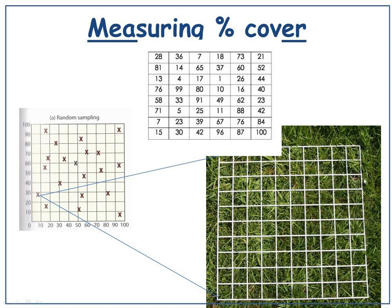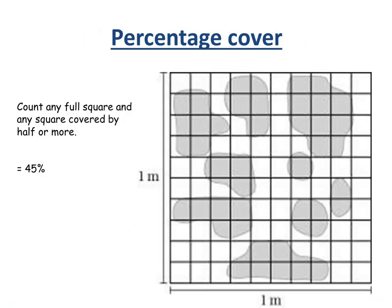Once you've dropped your quadrat, you can then measure the percentage cover of that particular species. Here I've got a 1 metre by 1 metre grid, so each square is 1%. What I would say is: if the square is full, or it's half or more full, then count it. If it's less than half, then don't count it.